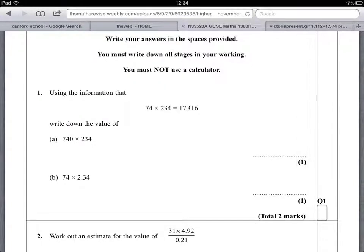Right, so question 1. 74 times 234 equals 17,316. I've got to use this information to work out two questions.